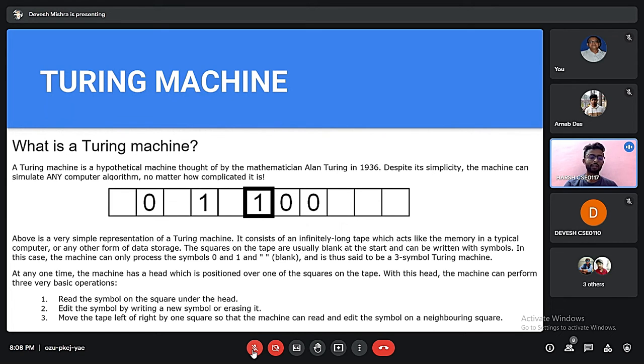In this case, the machine can only process the symbols 0 and 1 and blank, and thus is said to be a 3-symbol Turing machine. At any one time, the machine has a head which is positioned over one of the squares on the tape. With this head, the machine can perform only three basic operations: read the symbol on the square under the head, edit the symbol by writing a new symbol or erasing it, and move the tape left or right by one square so that the machine can read and edit the symbol on any square.